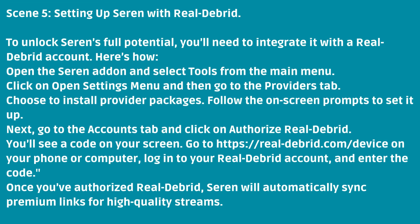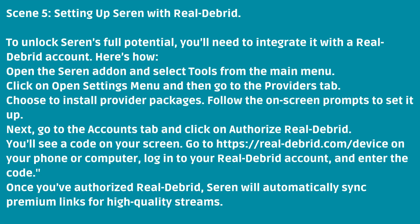Next, go to the Accounts tab and click on Authorize RealDebrid. You'll see a code on your screen. Go to realdebrid.com/device on your phone or computer, log into your RealDebrid account, and enter the code. Once you've authorized RealDebrid, Seren will automatically sync premium links for high-quality streams.